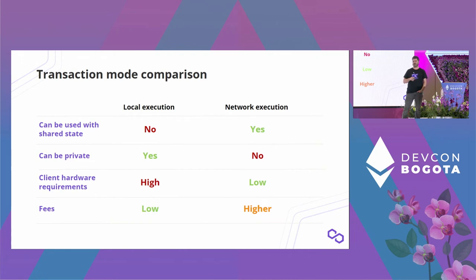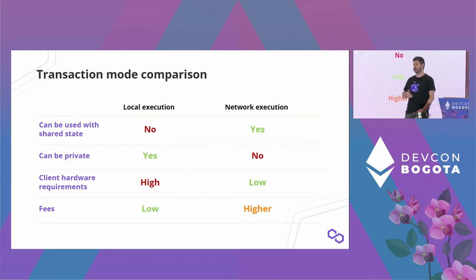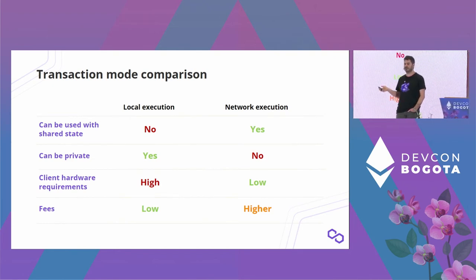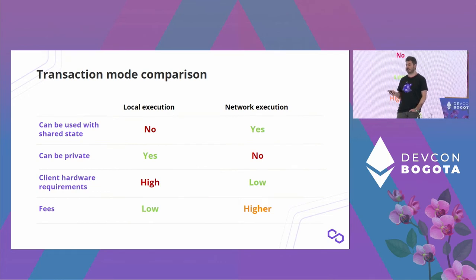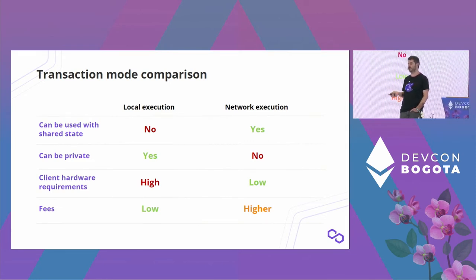Summarizing the pros and cons of local versus network execution: shared state accounts require network transactions, not local ones. Local transactions can have privacy since nobody on the network needs to execute them; network transactions cannot have privacy because somebody must execute them. Generating proofs locally is computationally intensive so client hardware requirements are higher, but because the proof is generated locally, there is much less work for the block producer — so fees for local transactions would be lower than for network-executed ones.